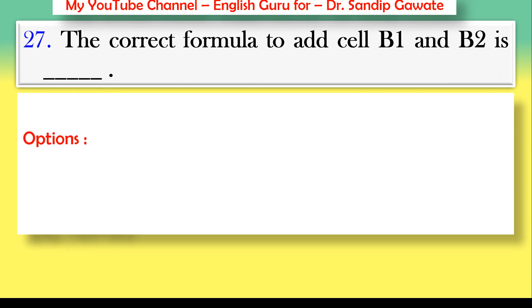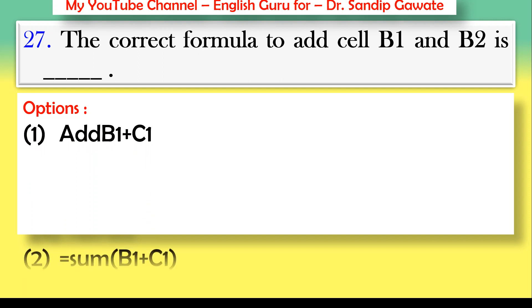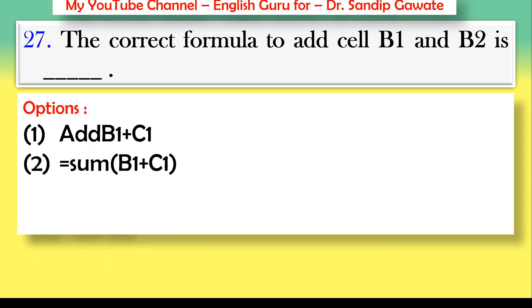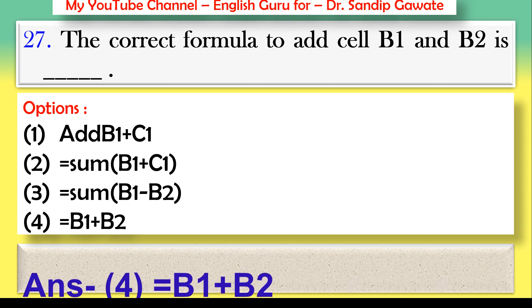Question 27: The correct formula to add cells B1 and B2 is — add B1+C1, =SUM(B1+C1), =SUM(B1-B2), or =B1+B2? The correct answer is option number four — =B1+B2.